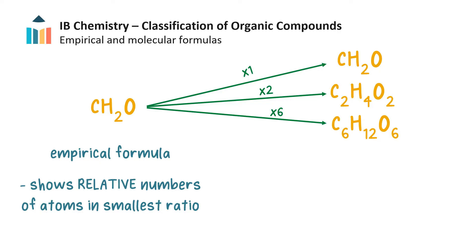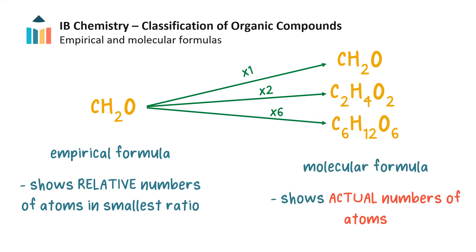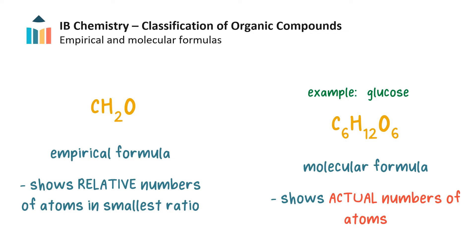The compound could contain any multiple of the atoms shown in the empirical formula. For example, the compounds CH2O, C2H4O2, or C6H12O6 all share the same empirical formula and would produce the same elemental analysis results. The formula showing the actual number of atoms in the compound is called the molecular formula. If the compound was glucose, for example, then its molecular formula would be C6H12O6, because one glucose molecule contains six carbon atoms, 12 hydrogen atoms and six oxygen atoms.